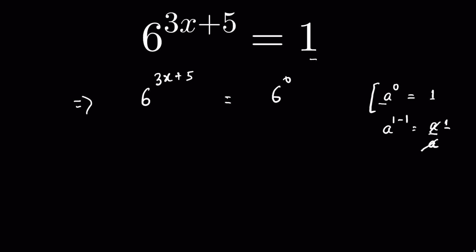Now we know if a raised to the power m is equal to a raised to the power n, and a is not equal to 0 or plus minus 1, then we can say m is equal to n. Means if the bases are same, then we can compare the exponents. So we can write 3x plus 5 is equal to 0.